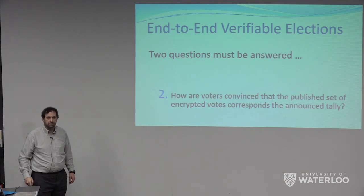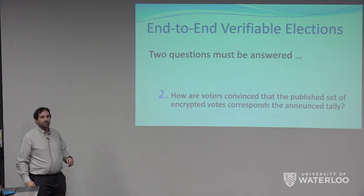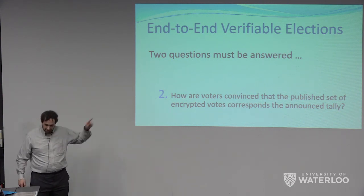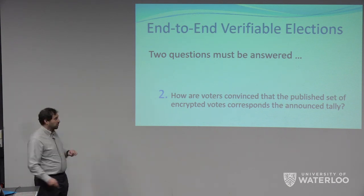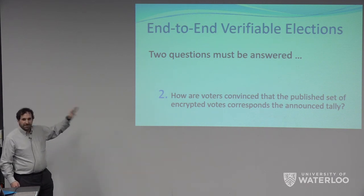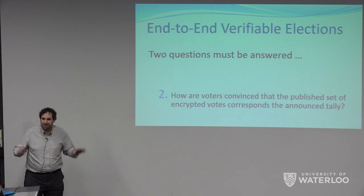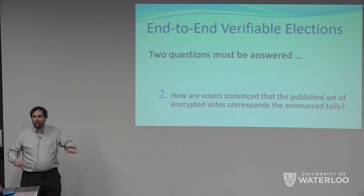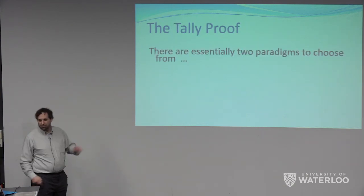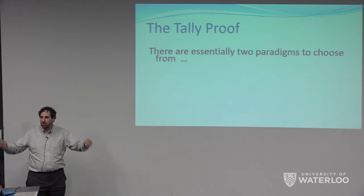If you have these two properties, you have end-to-end verifiability in an election that has privacy. I'm not talking about the camcorder glasses coercion issues yet. The two questions are: how do users encrypt their votes and check that their encryptions are correct, and how do you do the mathematical proof? How do you prevent coercion of being forced to tell me your encryption key? But I'll start with part two: how you take a set of encrypted ballots and turn them into a tally in a way that can be mathematically checked.